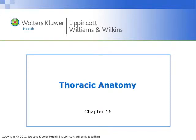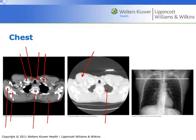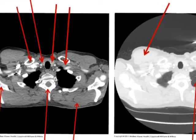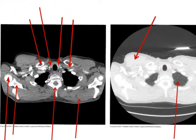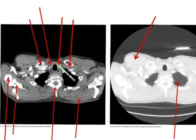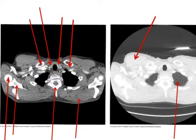Let's spend some time going over thoracic anatomy. That is the left carotid artery, thyroid, the thyroid, clavicle, and the right subclavian vein.